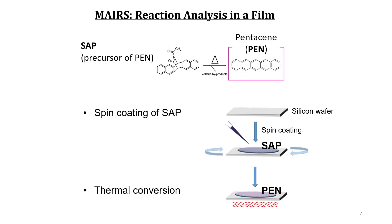I'm showing you application studies using MAIRS. Pentacene is a famous compound as an organic semiconductor, but it is not dissolved in organic solvent, which is not good for wet process. Therefore, this precursor compound SAP was developed, which is easily dissolved in a solvent. Once the soft film on silicon is prepared by the spin coating technique, then the film is converted by heating to have a pentacene film.